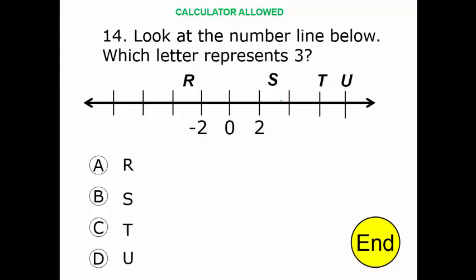The choice is T — not so fast. The hash mark actually goes 0 to 2. So in fact, this would be 4, this would be 6, this would be 8. Think of it this way: there's an imaginary hash mark in between each one that represents 1. So this would actually be 1, 2, 3, 4, 5, 6, 7, 8. Now the choice is clear — where is number 3? Letter S.